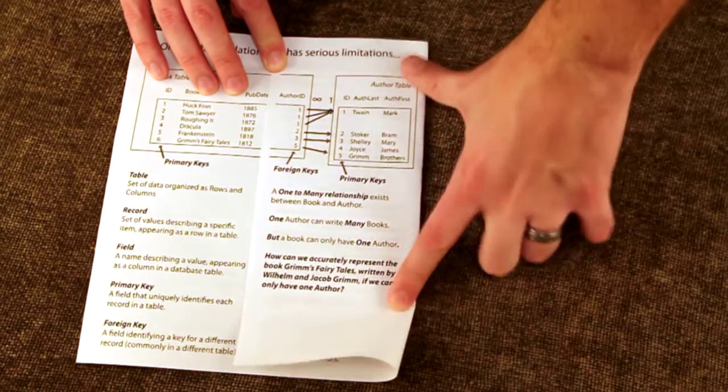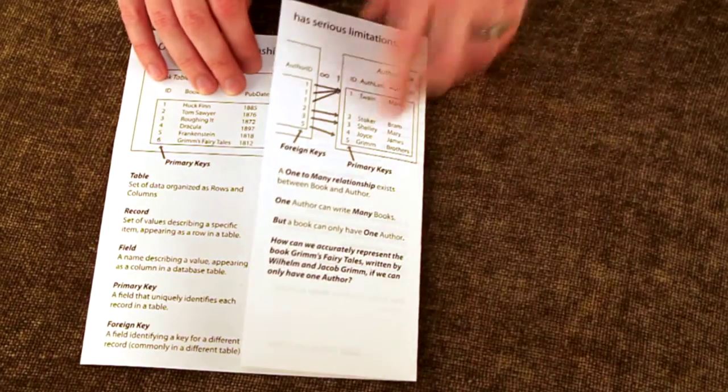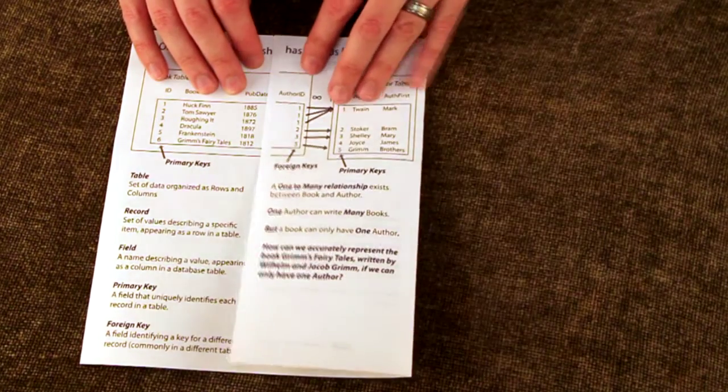In order to produce the pamphlet, it must be printed or copied on a duplexing printer or copier, or one side must be printed and then reloaded into the printer to print the other side.